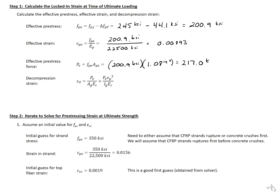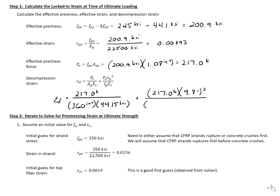Next, we can find our decompression strain. Our decompression strain is our effective prestress force, 217 kips, divided by our gross area, 360 square inches, times our concrete stiffness, 4,415 ksi. We then add our effective prestress force, 217, times our eccentricity squared, divided by I-gross, 18,706 inches to the fourth, times our concrete stiffness, 4,415 ksi. This equals 3.89 times 10 to the negative fourth.